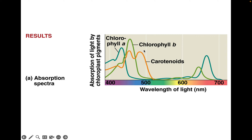Looking at the wavelengths of light that these different pigments absorb across the visible spectrum from 400 to 700 nanometers: Chlorophyll A has peak absorbance in purplish-blue light and a second peak in reddish-orange light. Chlorophyll B absorbs more blue light with a second peak in straight-up orange. Carotenoids have two peaks of absorbance in blue and green light. All these peak positions represent colors of light that can be harvested by these pigments for photosynthesis.